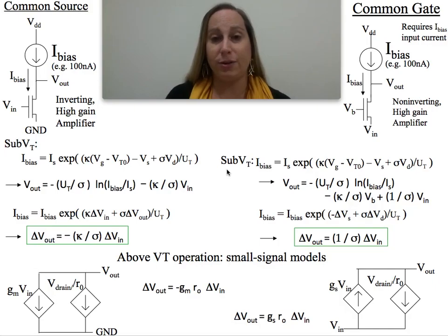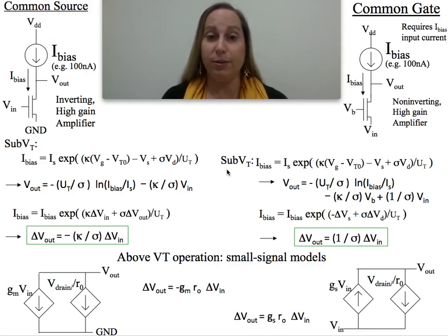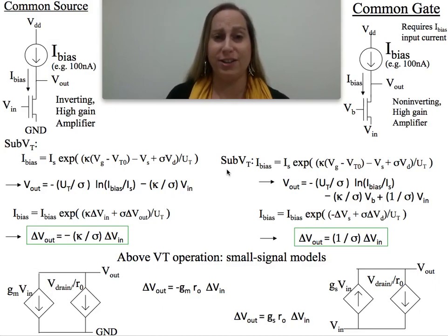Remember, both of these are cases where I have a current source that's really constraining the current in the device. And so in many ways, what it's saying is the current in the channel has to stay fixed. And now the other three terminals, the gate, the source, and the drain, are the parameters which all have to kind of balance each other to make this work.